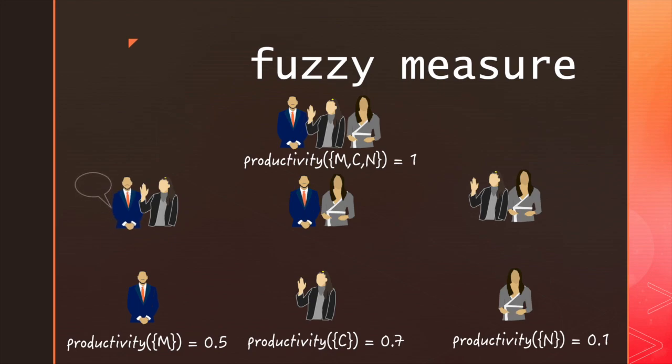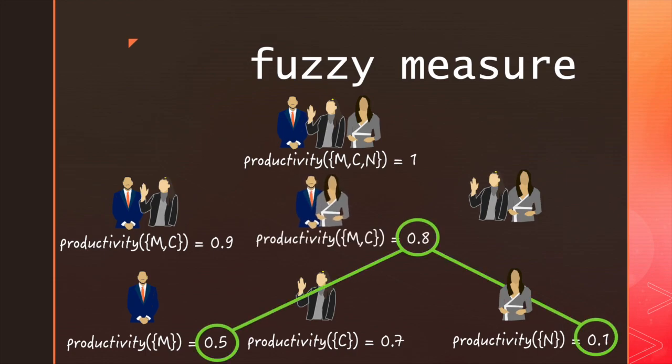But then maybe Melo and Candice talk all the time when they work together, so they're only a little more productive than when Candice works by herself. And on the other hand, maybe Nika and Melo work really well as a team, and are able to produce even more than they can individually by cooperating.